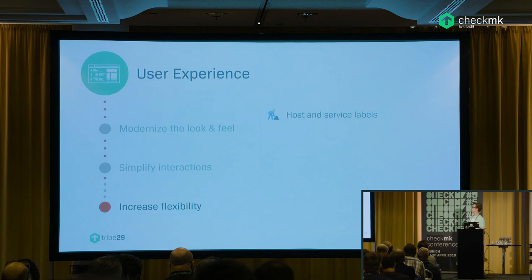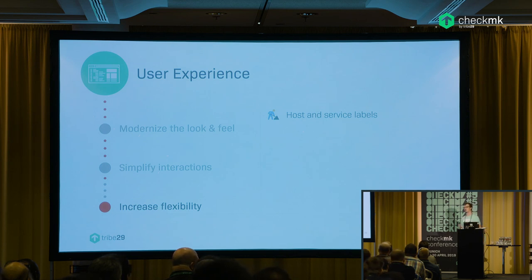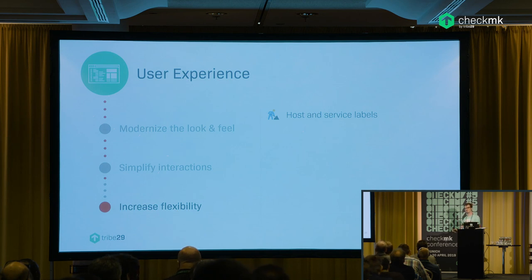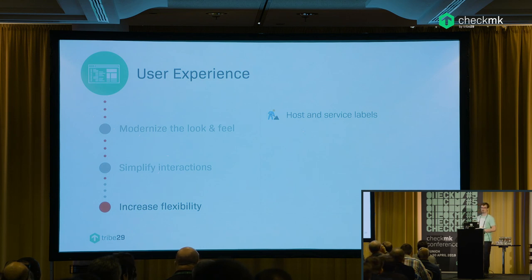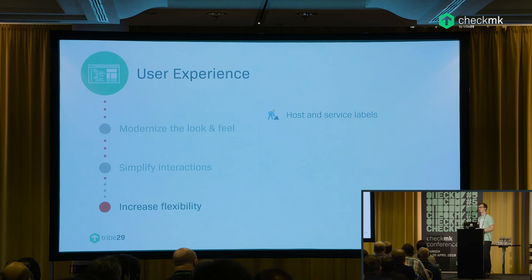Also in WATO is host and service labels, which is new — Jan mentioned that briefly. It means hosts and services can have a given number of attributes and you can derive things from that, like rules and views. Docker, Kubernetes, and clouds all have that ability. We've had something similar in Checkmk already with host tags, but why not use host tags could be your question.